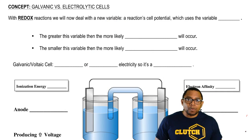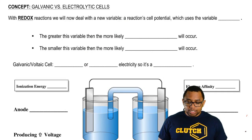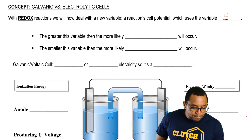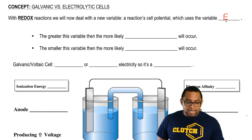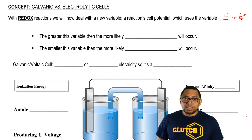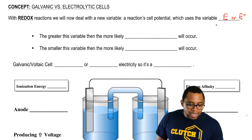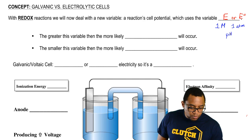Before we talk about the differences between these two cells, with redox reactions we will now deal with a new variable called the reaction's cell potential. It uses the variable E. E without the circle means it's under non-standard conditions. E with a circle means we are under standard conditions. Standard conditions usually refers to a molarity of 1, a pressure of 1, or a pH close to neutrality — so pH equals 7.